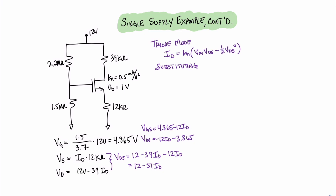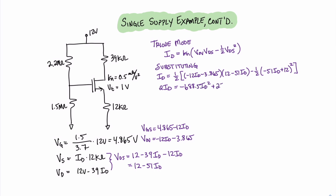Substituting, we get a long expression for ID: ID equals 1/2 times the quantity minus 12·ID plus 3.865 times minus 51·ID plus 12, minus 1/2 times the quantity minus 51·ID plus 12, squared. Rearranging and doing the algebra, we find that 2·ID equals minus 688.5·ID² plus 270.9·ID minus 25.62. Moving the 2·ID to the right, we get 0 equals minus 688.5·ID² plus 268.9·ID minus 25.62.